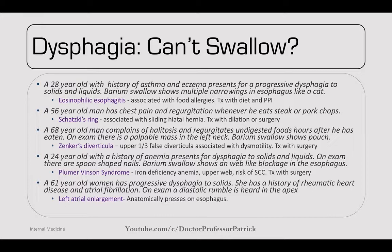A 57-year-old man has chest pain and regurgitation whenever he eats steak or pork chops. This is a classic Schatzki's ring, associated with a sliding hiatal hernia. Treat with dilation, surgery, or making sure to chew food properly.